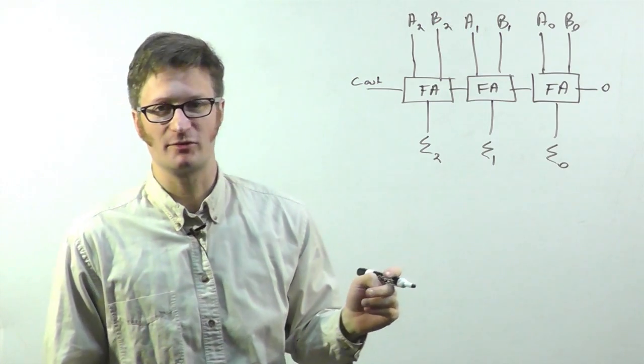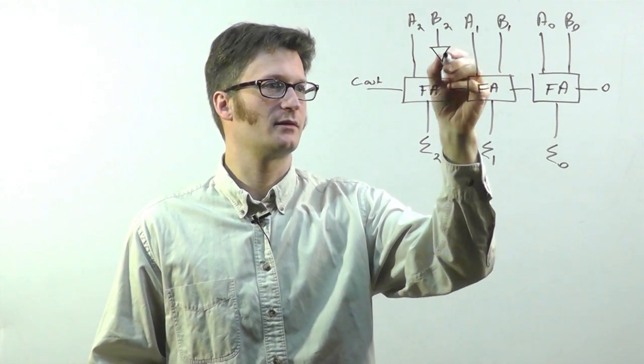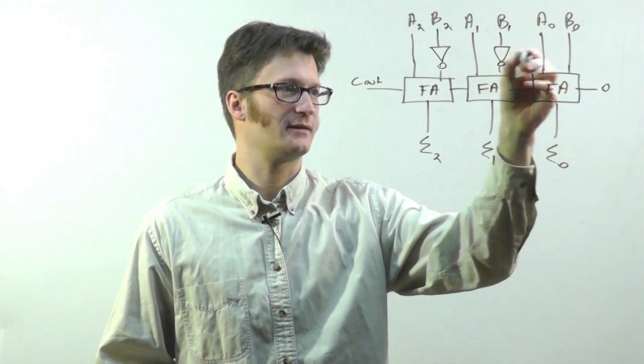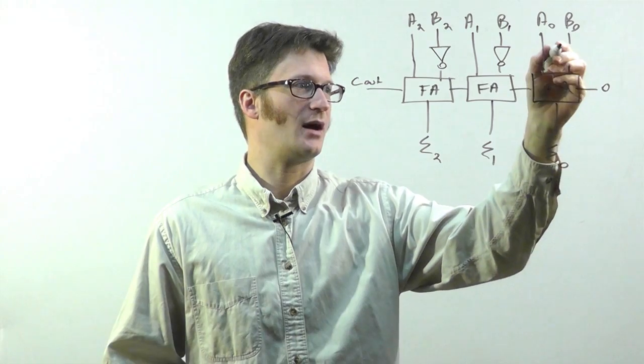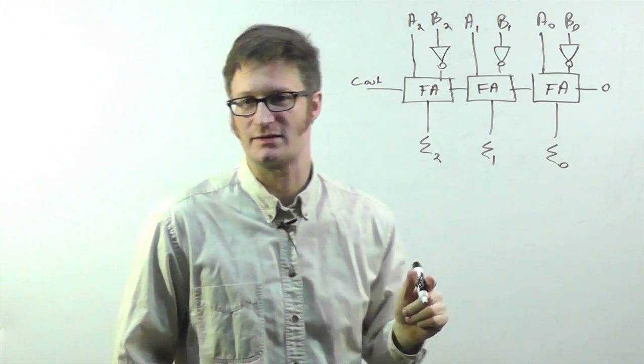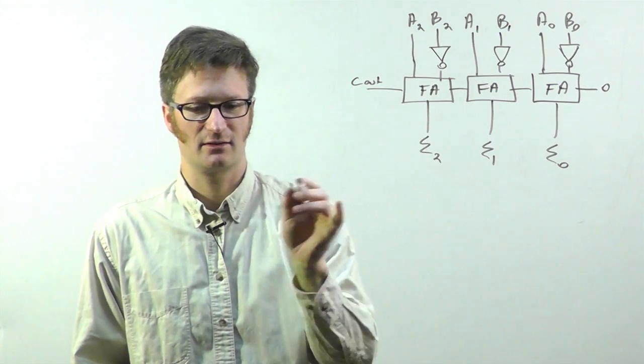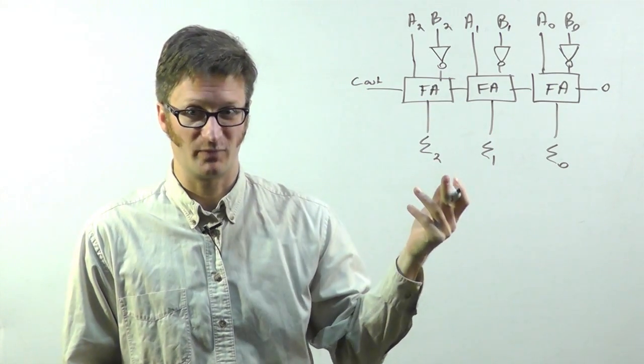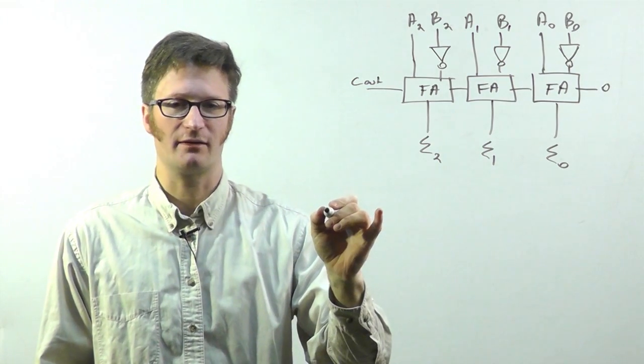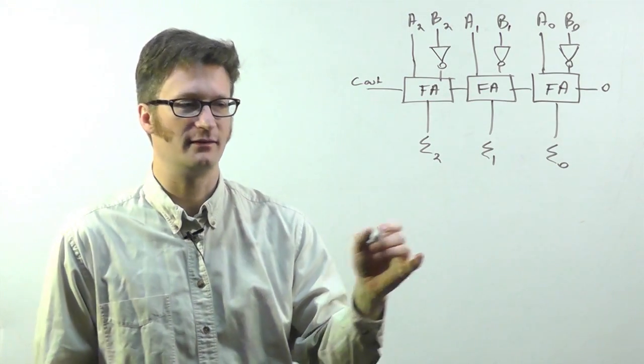Now, to perform subtraction, all I have to do, as you remember, for a ones complement number, I just need to invert the bits. So this would now perform A minus B. But there's one little catch here. If you recall, when you're doing binary subtraction, or addition actually, both ways really, the carry out needs to be brought around. And if you have a carry out, you need to add one to your result.